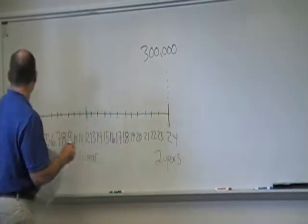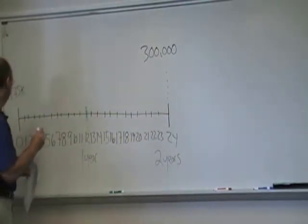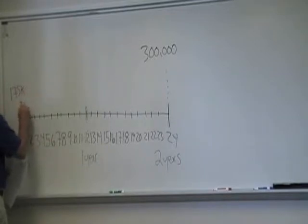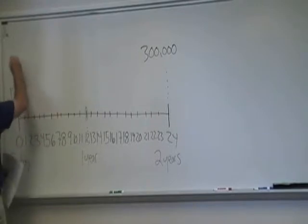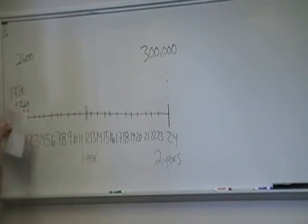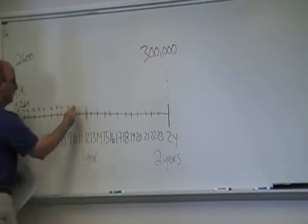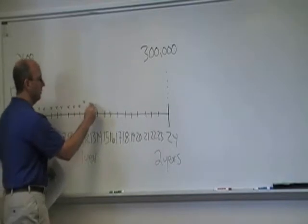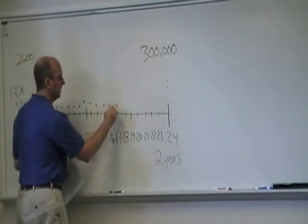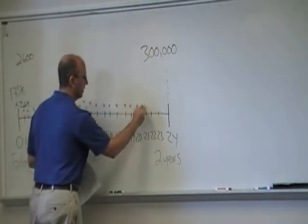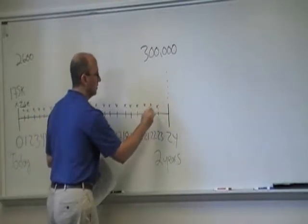So she's going to be paying $2,600 at time 0, 1, 2, 3, 4, 5, 6, 7, 8, 9, 10, 11, 12, 13, 14, 15, 16, 17, 18, 19, 20, 21, 22, and time 23.